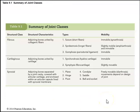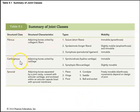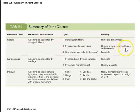Chapter 9.1 does a good job of summarizing the different joint classes. Classification based on structure includes fibrous joints, cartilaginous joints, and synovial joints. Joint classification based on function or mobility includes synarthroses, amphiarthroses, and diarthroses.